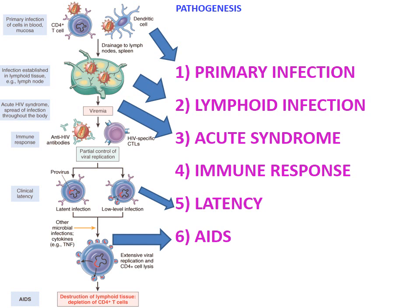This flowchart shows the pathogenesis: first there is primary infection of cells in blood and mucosa by virus particles, which infect host CD4 T cells, dendritic cells, monocytes, and macrophages. These infected cells are drained to the lymph nodes and spleen, resulting in adenopathy (lymph node enlargement) and splenomegaly. This lymph node reaction is preceded by viremia — an increase in viral load in the body.